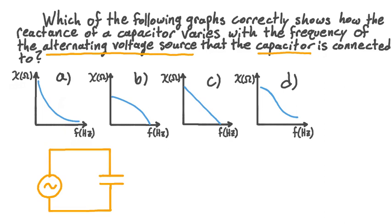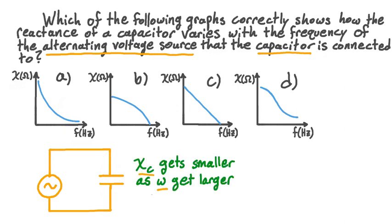Recall that for a capacitor connected to an alternating voltage source, the capacitor first charges with, say, positive charge on the top plate and negative charge on the bottom plate. Then, after the EMF reaches a maximum value, the capacitor begins to discharge, and then charge again with negative charges on the top plate and positive charges on the bottom plate. After the electromotive force reaches its maximum value in the other direction, the capacitor again discharges and the cycle repeats itself. The more charged a capacitor is, the more it opposes current, so the larger its reactance. However, the faster the electromotive force changes directions, the less time the capacitor has to charge before it begins to discharge. This means the capacitive reactance gets smaller as omega, the angular frequency, gets larger, and conversely the capacitive reactance is larger for smaller angular frequencies. As a formula, the capacitive reactance is equal to 1 divided by the angular frequency times the capacitance, and since omega equals 2 pi f, we can write the capacitive reactance as 1 divided by 2 pi times the frequency times the capacitance.